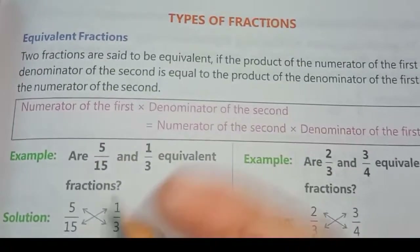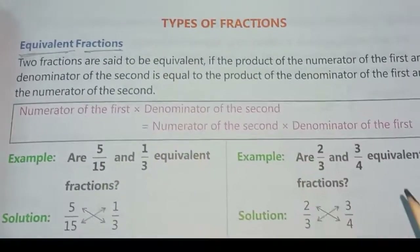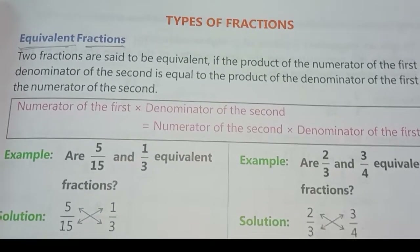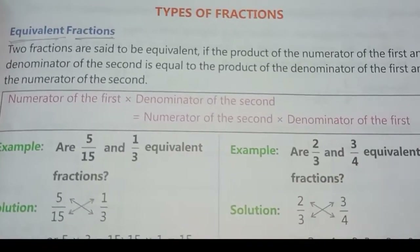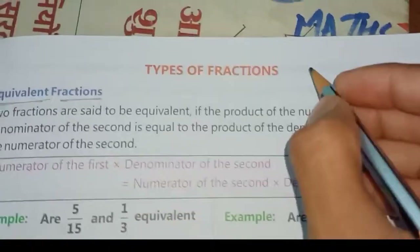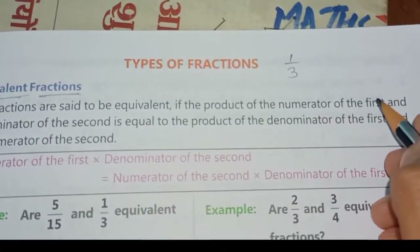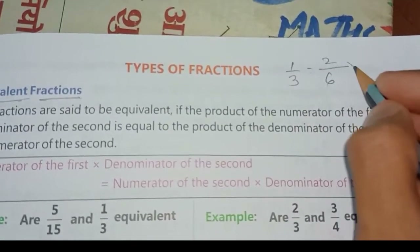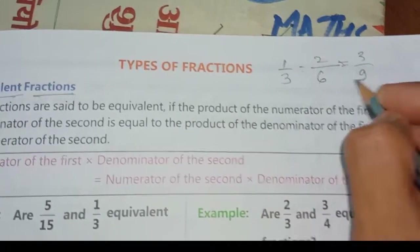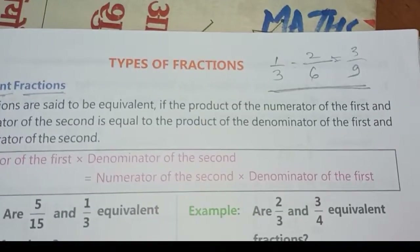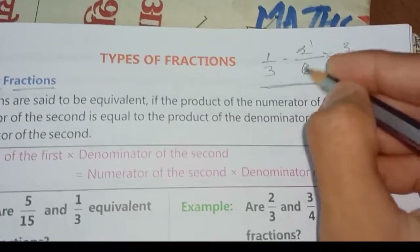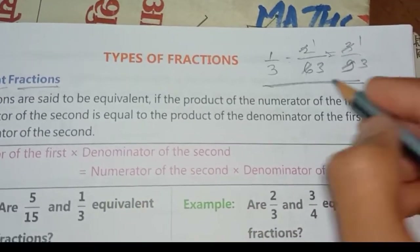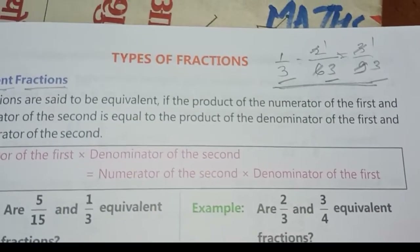Now, types of fractions. First: equivalent fractions. An equivalent fraction means fractions having the same value — the same proportion in the numerator and denominator. For example, take one by three. If we multiply by two, we get two by six. If we multiply by three, we get three by nine. All these fractions are equivalent because dividing back by two or three returns us to one by three. If the base value is the same, it is called an equivalent fraction.